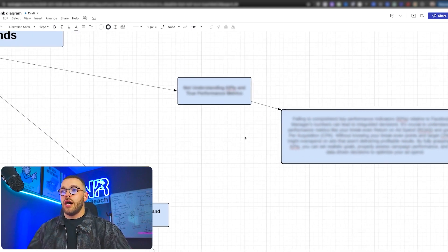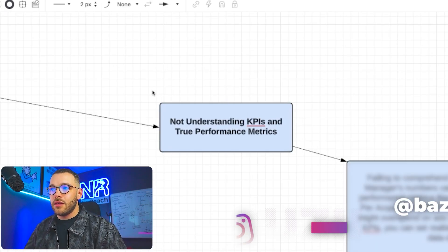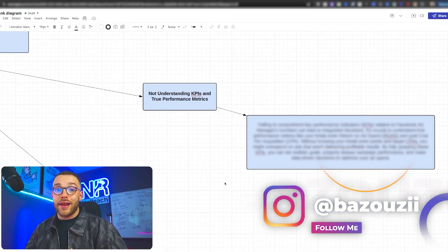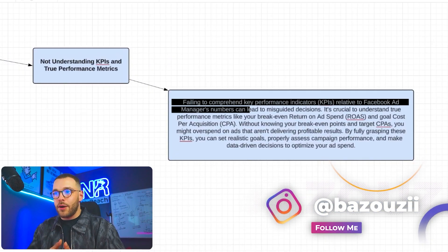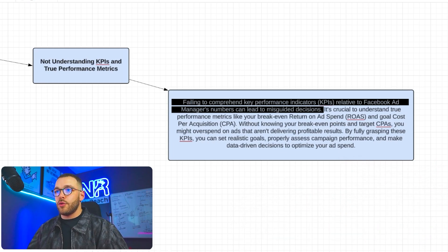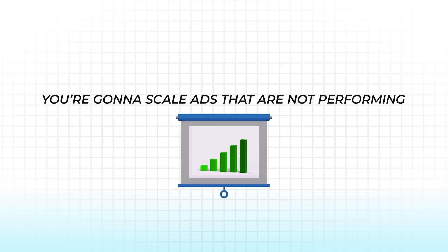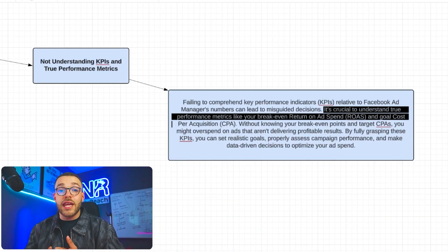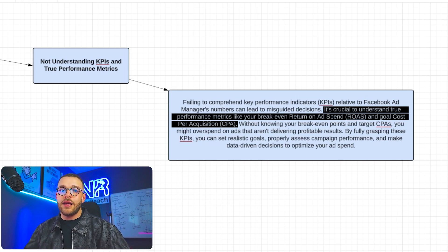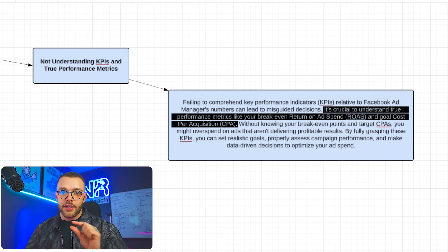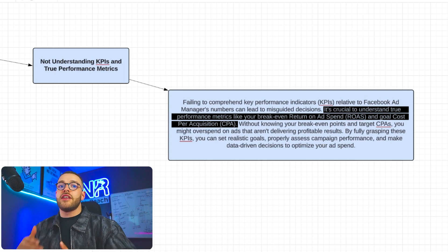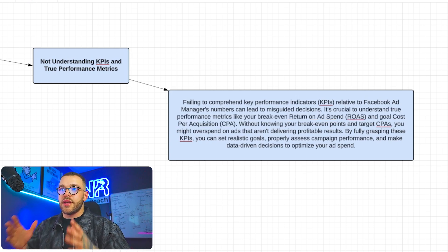The last mistake — and I left it for last for a reason — is not understanding KPIs and the true performance metrics inside your ad account. If you're failing to comprehend key performance indicators relative to Facebook Ads Manager, this leads to misguided decisions: you'll turn off ads that are performing and scale ads that are not. You need to understand things like your breakeven return on ad spend, your goal cost per acquisition, and what metrics like CTR, CPC, and CPM mean — and set realistic goals for those numbers to properly assess campaign performance.